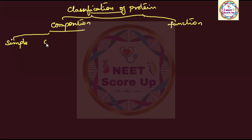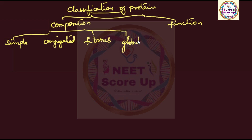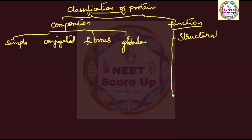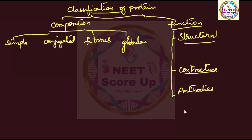Based on composition, proteins are divided into Simple and Conjugated types. Based on molecular shape, there is Globular protein. Based on function, proteins are divided into structural protein, contractile protein, antibodies, blood protein, and toxins.